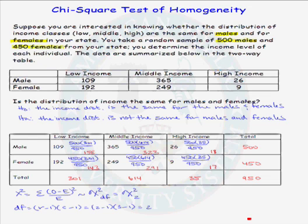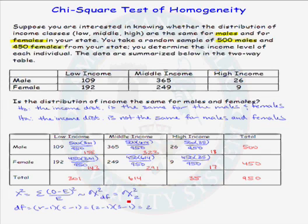Doing this for the remaining five cells, we get an expected cell frequency of 326 for male middle income (500 × 614 / 950). The other expected cell frequencies are 18, 143, 291, and 17. Our test statistic has a chi-square distribution when all expected cell counts are greater than 1 and no more than 20% are less than 5. Since all expected cell frequencies are greater than 5, our condition is met.